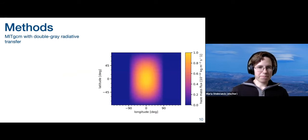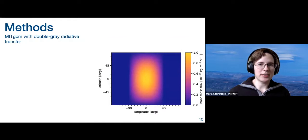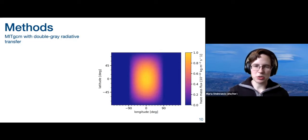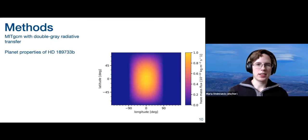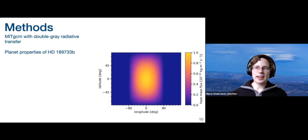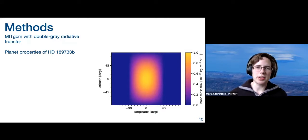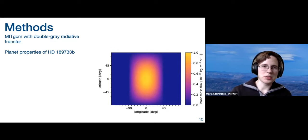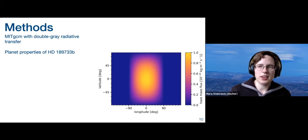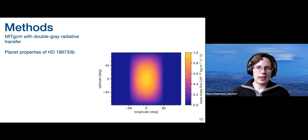Moving on to the methods: I'm using the MRT GCM with a double-gray radiative transfer. I'm assuming relatively simple radiative transfer because that allows us to test the model more thoroughly. I'm assuming the planet properties of HD 189733b, which is both one of the best-studied hot Jupiters and one of the classic examples where you get a very steep short-wavelength slope, typically interpreted as evidence for aerosols. It is also very cool compared to a lot of other hot Jupiters, which is more favorable to the formation of photochemical hazes.